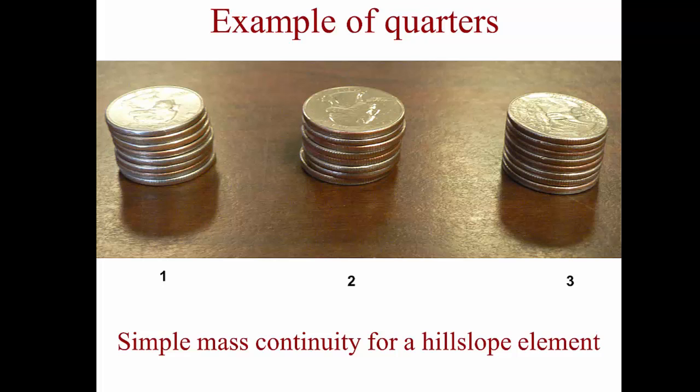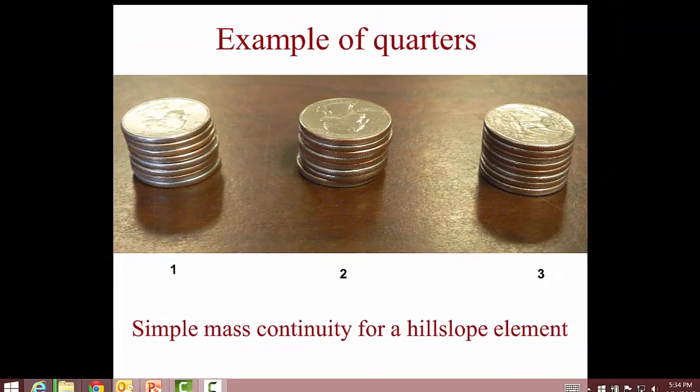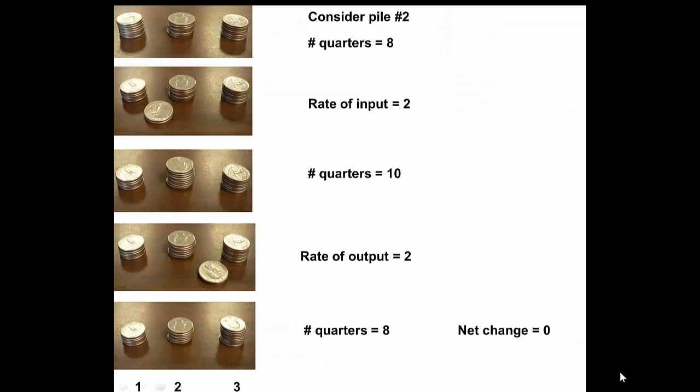We start off with a constant number of quarters in each stack. Let's just put our attention on to pile number two. Then it has eight quarters in it.